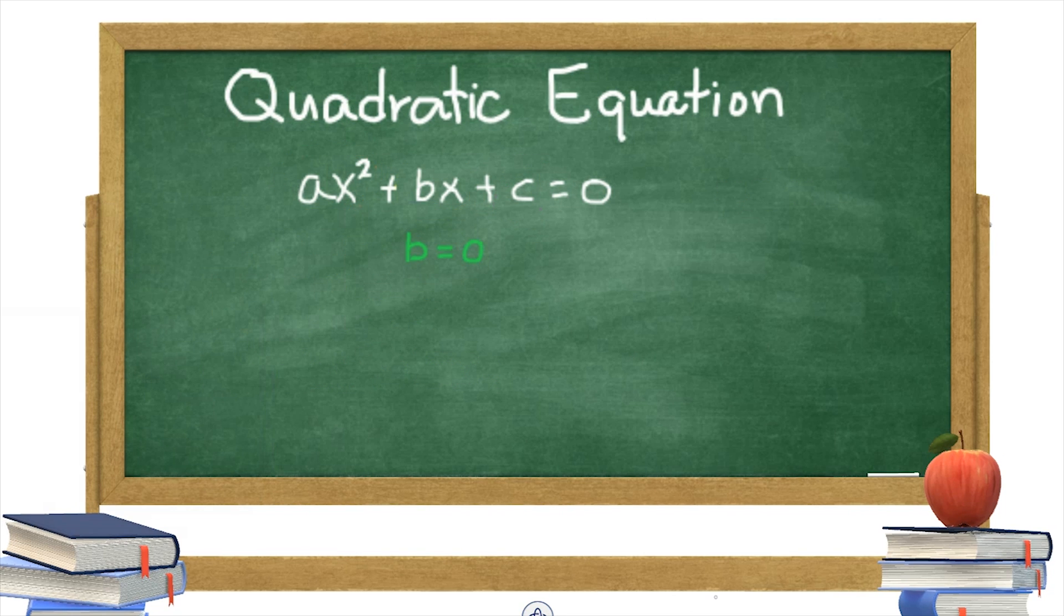When b is equal to 0 in the equation ax squared plus bx plus c is equal to 0, it results to a quadratic equation of the form ax squared plus c is equal to 0.